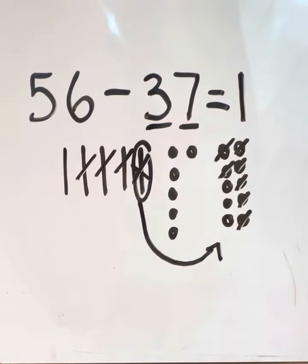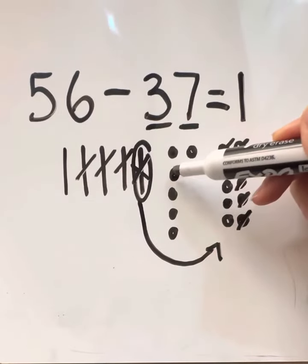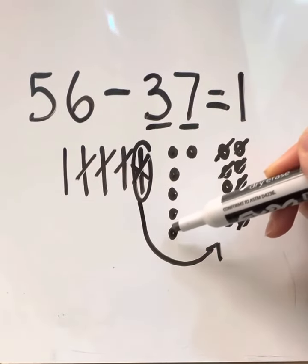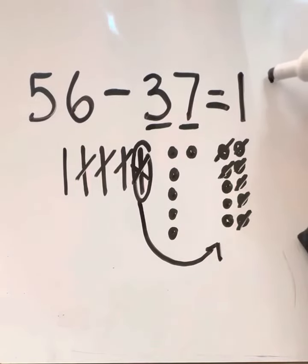And how many ones? You have to remember your ones from 56 also. Let's count. One, two, three, four, five, six, seven, eight, nine. So our answer is? 59. What? 19. 19. Good job.